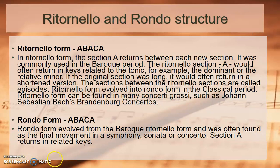In ritornello form (A, B, A, C, A), section A returns between each new section. It was commonly used in the Baroque period. The ritornello section A would often return in keys related to the tonic — for example, the dominant or relative minor — so the A section may appear in C major, then G major, then A minor. If the ritornello section was long, it would often return in a shortened version. The sections between the ritornello sections are called episodes.